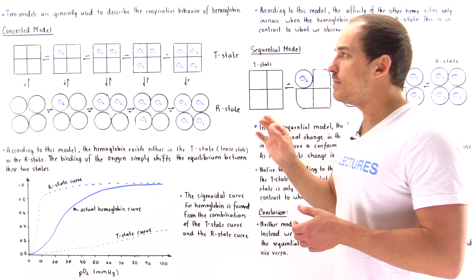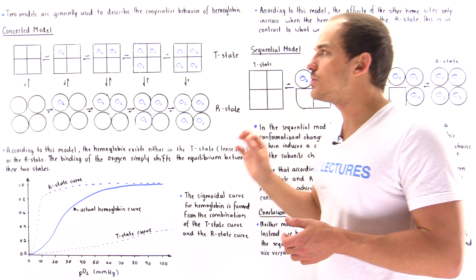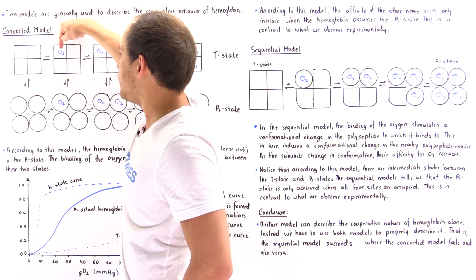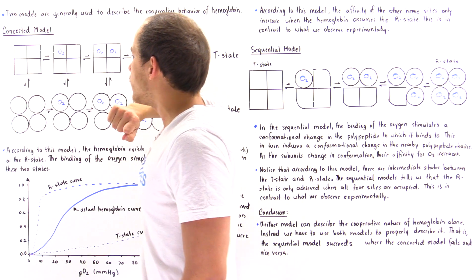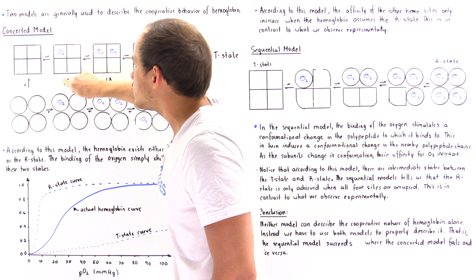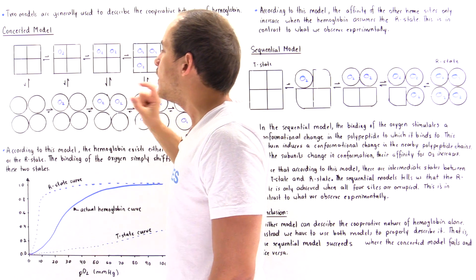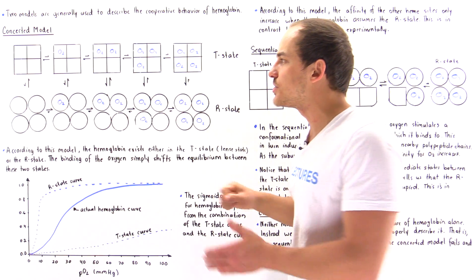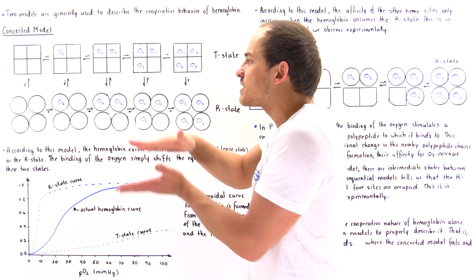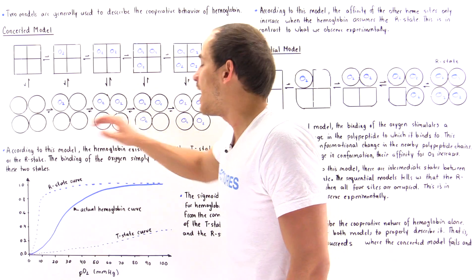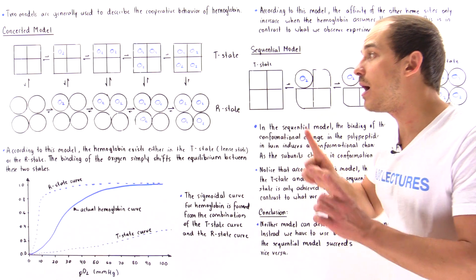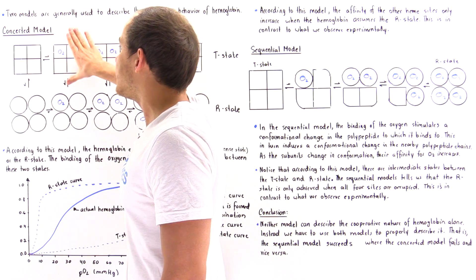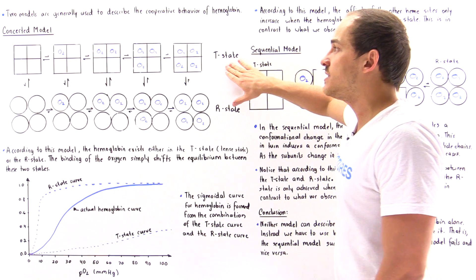What happens when we bind a single oxygen onto one heme group? The arrow going toward the R state becomes ever so slightly longer, meaning the equilibrium shifts slightly towards the R state. But in this particular case, our structure will still be predominantly in the T state.